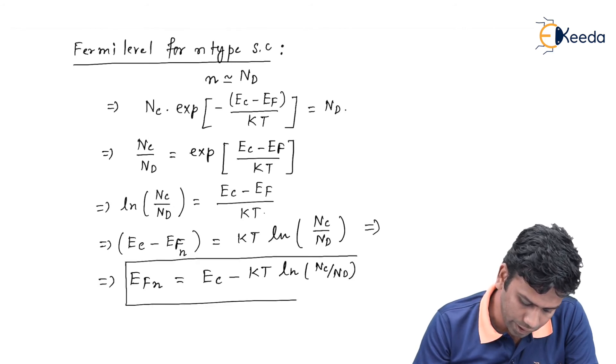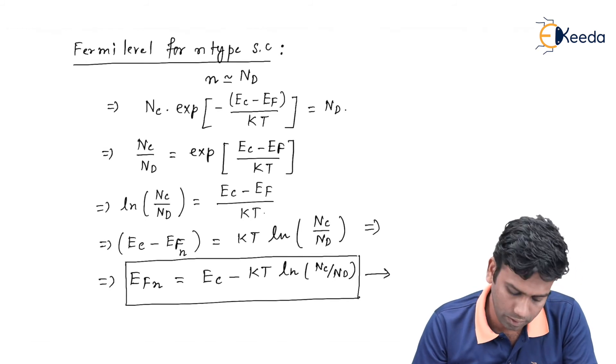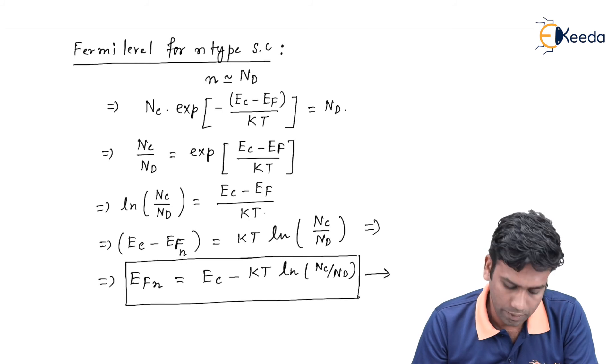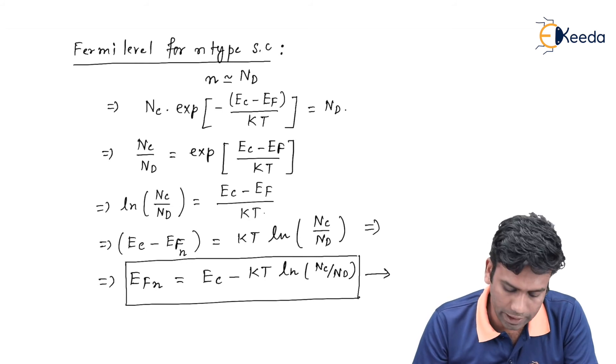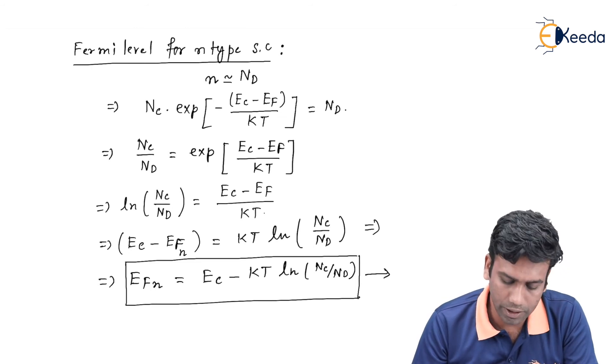This Efn equation is the final equation of the Fermi level in the n-type semiconductor that is given with respect to the conduction band of the n-type semiconductor.